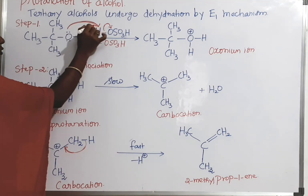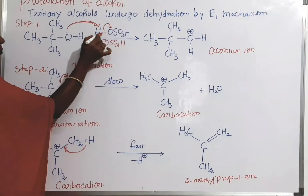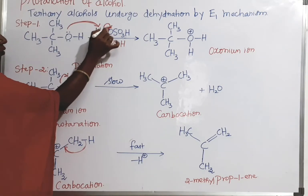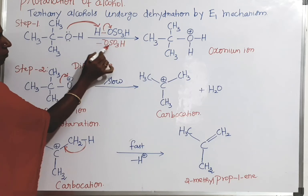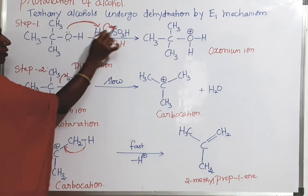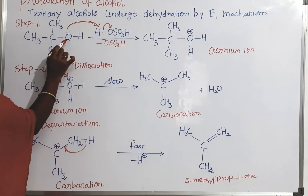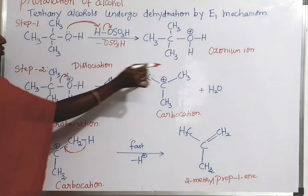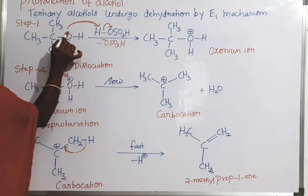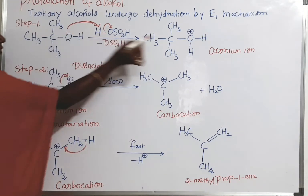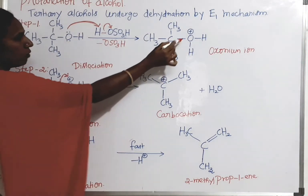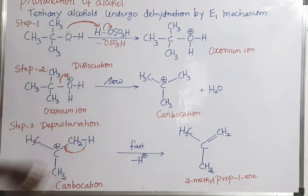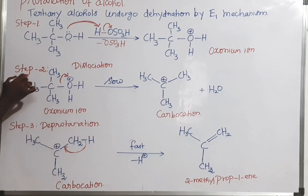Here, a lone pair of electrons on the oxygen shifts to this hydrogen, and this bond shifts to the oxygen. This oxygen, which is now carrying a negative charge, is removed as –OSO₃H. That removal results in a bond formation between this oxygen and this hydrogen, and this oxygen carries a positive charge because of donating the electrons. So there is a formation of the oxonium ion in the first step.